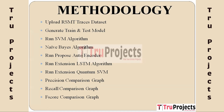The next module is the precision comparison graph, which visually compares the precision values (true positive rate) of the different algorithms. Precision indicates the accuracy of positive predictions made by the models. The recall comparison graph provides a visual comparison of the recall value (sensitivity) of the algorithms — measuring the ability to correctly identify positive instances. The last module is the F-score comparison graph, displaying the F-1 scores, which is the harmonic mean of precision and recall, offering a balanced evaluation metric.